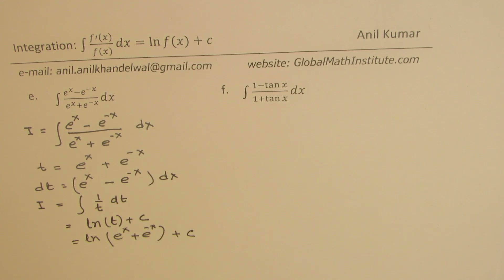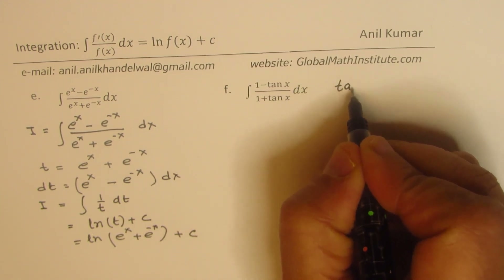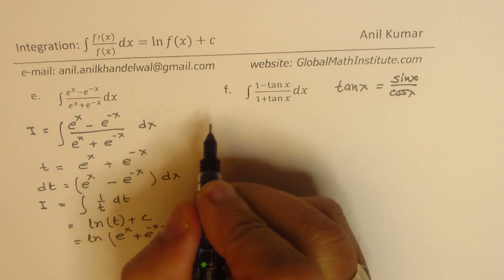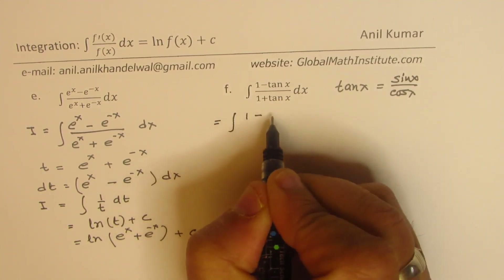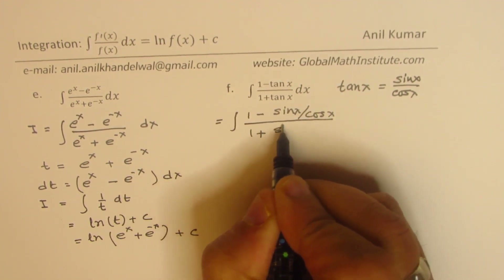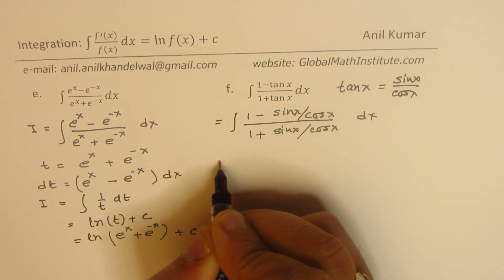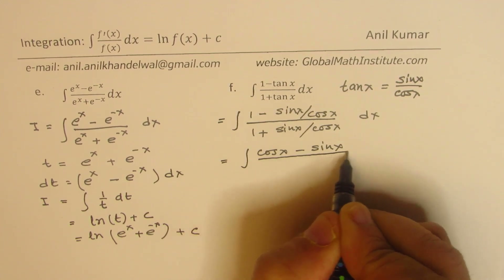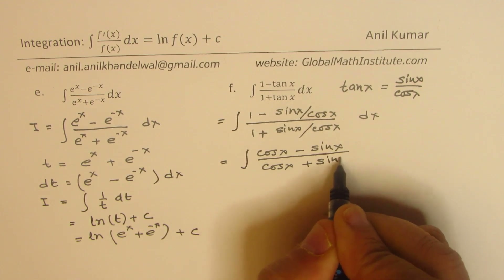Here is the last example — this one is not straightforward. We have (1 − tan x)/(1 + tan x) dx. We substitute tan x as sin x / cos x to understand what this integral is. We can write this as the integral of (1 − sin x/cos x)/(1 + sin x/cos x) dx. Multiplying through by cos x, we get the integral of (cos x − sin x)/(cos x + sin x) dx.